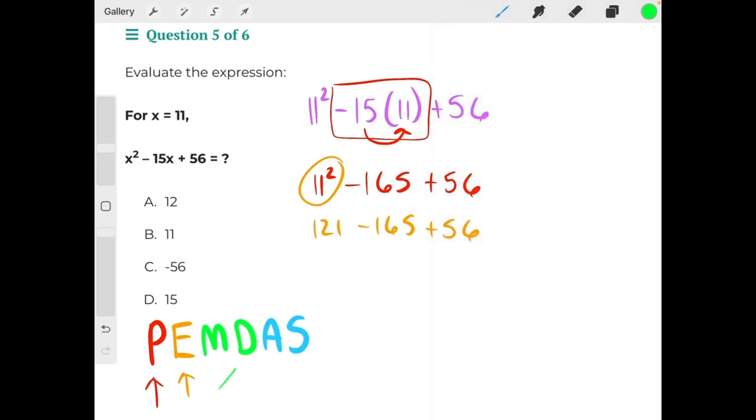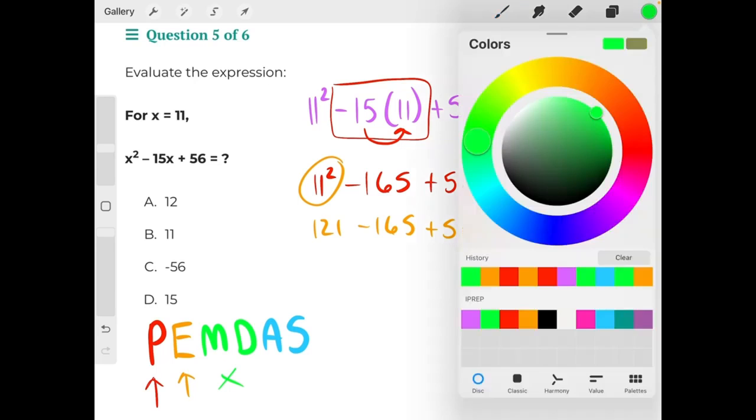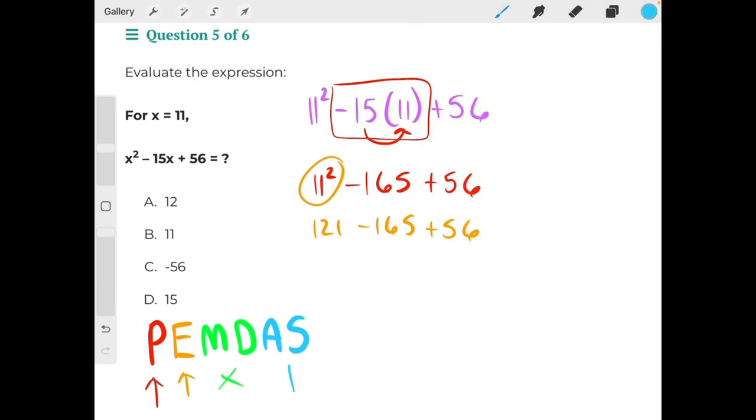There is no multiplying or dividing in this problem, so we would skip straight to addition and subtraction. From left to right, 121 minus 165 is negative 44, plus 56 would give us positive 12,